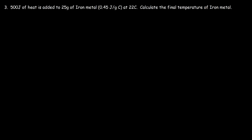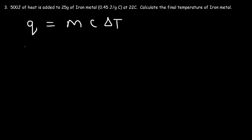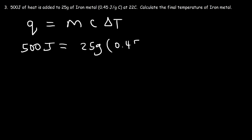Number three: 500 joules of heat is added to 25 grams of iron metal at 22 degrees Celsius. Calculate the final temperature of iron metal. Because heat is added, the temperature will go up. Q is equal to mc delta T. Q is positive 500. The mass is 25 grams. The specific heat capacity is 0.45 joules per gram per Celsius. Delta T is the final temperature minus the initial temperature, which is 22.